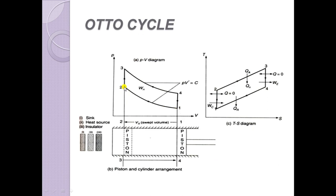The first process is from point 1 to point 2, which is the isentropic compression process, where the piston moves from position 1 to position 2. During this process, due to compression of the working substance, temperature increases. But it is an isentropic process, so we place a heat insulator near the cylinder head, making heat transfer equal to zero — that is, no heat transfer from the working substance to the surroundings.